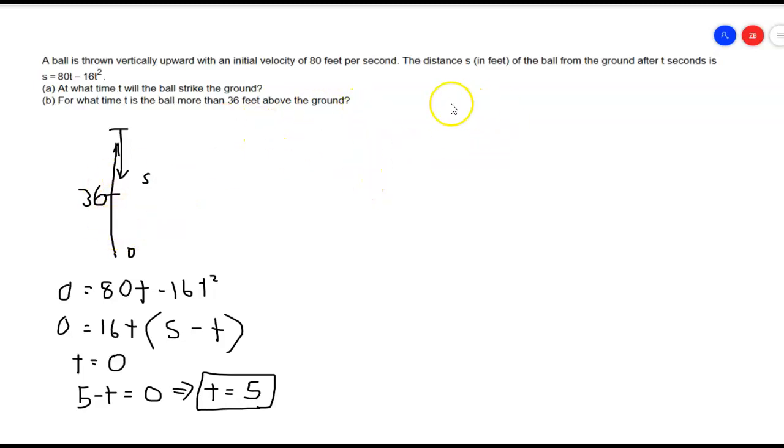Let's do the same kind of thing, except this time we're going to let our s equal 36. So we're going to have 36 equals 80t minus 16t squared. If I move this stuff around so I can set it equal to 0, I'm going to end up getting 16t squared...